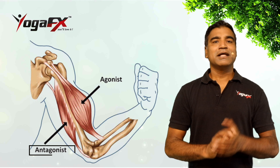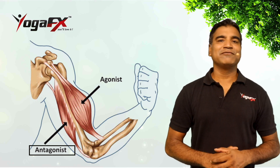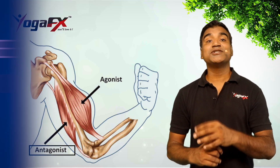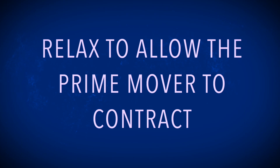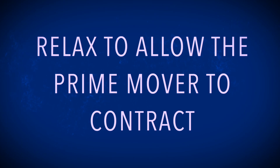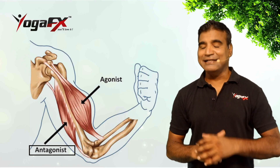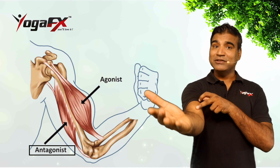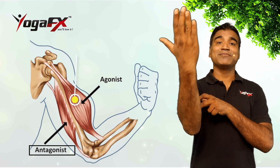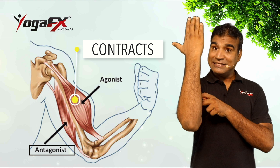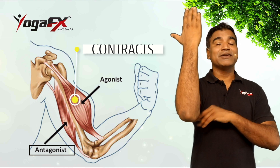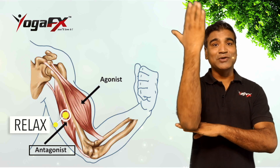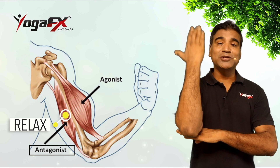Antagonist. The muscle on the opposite side of a joint to the prime mover, and which must relax to allow the prime mover to contract, is called an antagonist. For example, when the bicep brachii on the front of the arm contracts to flex the elbow, the tricep brachii on the back of the arm must relax to allow this movement to occur.